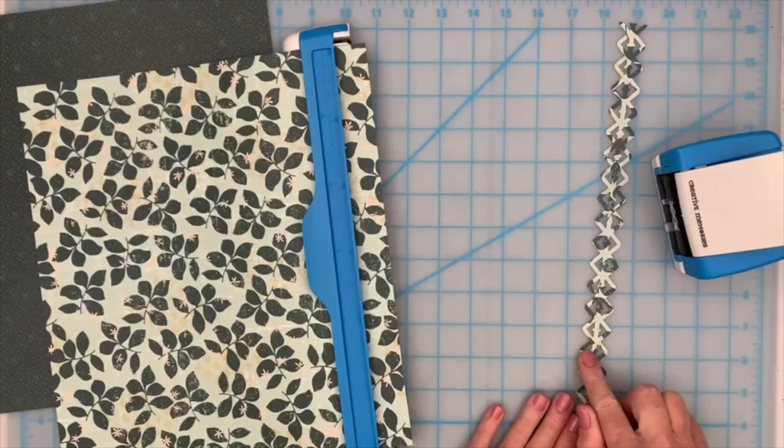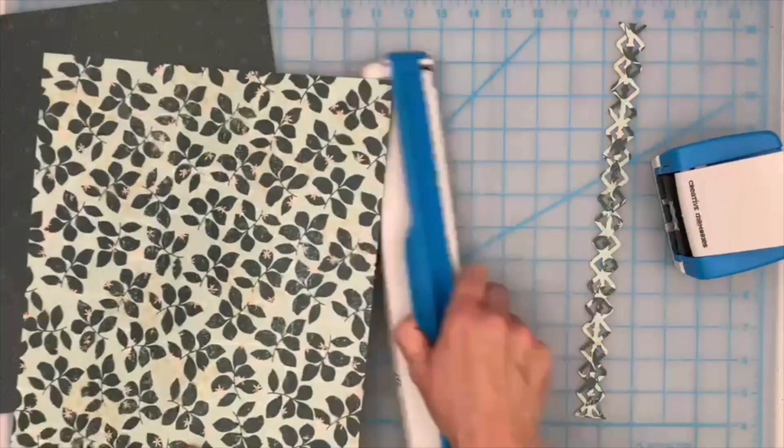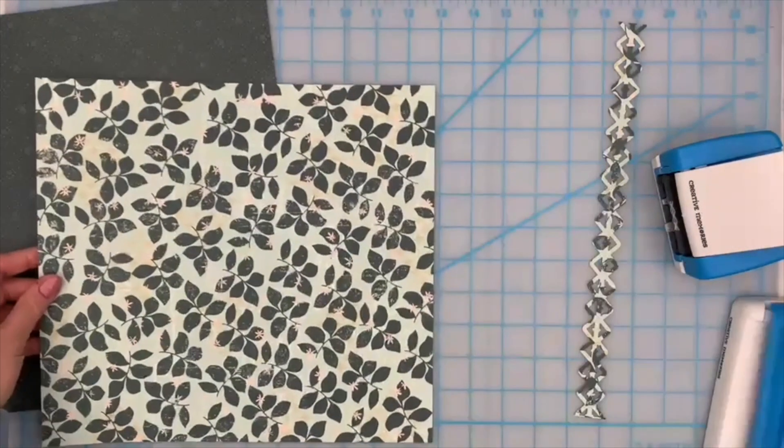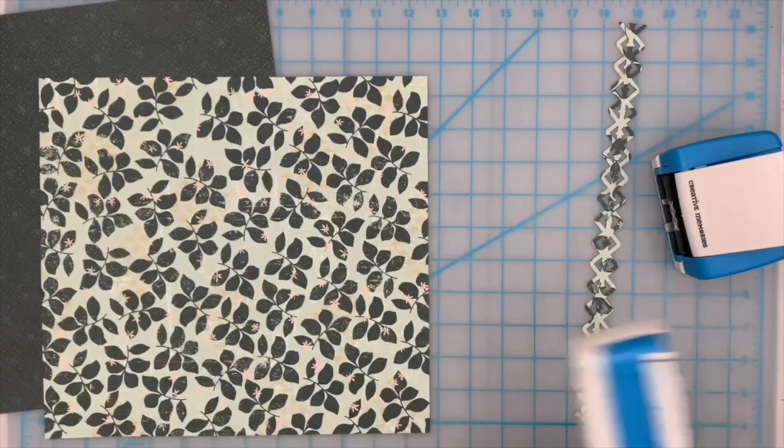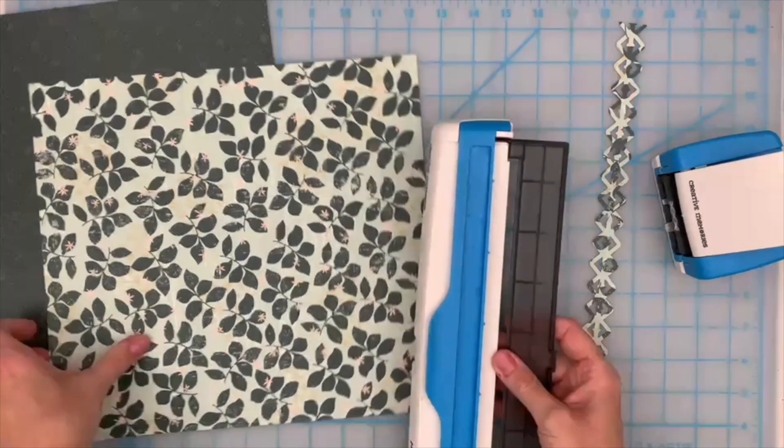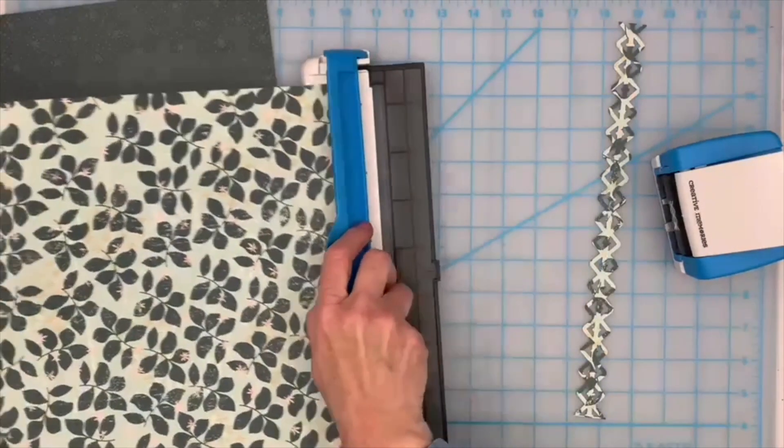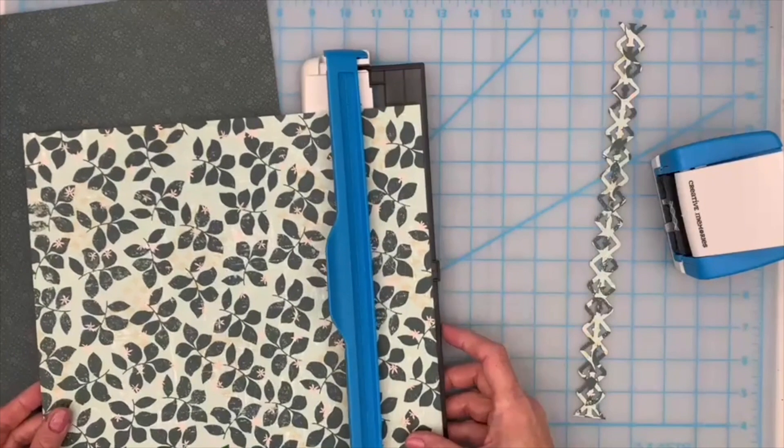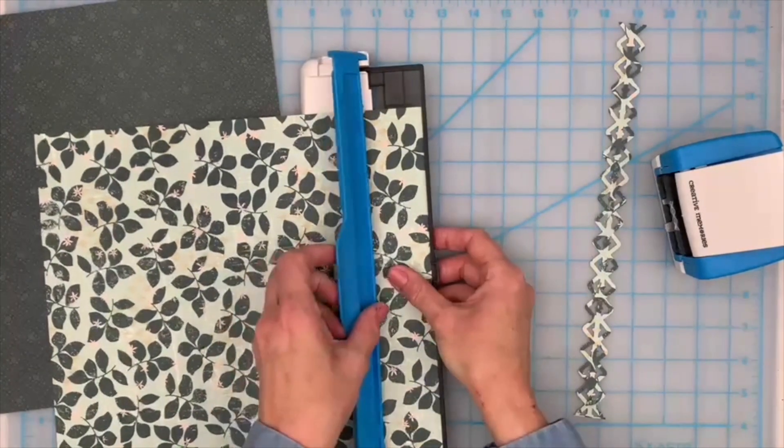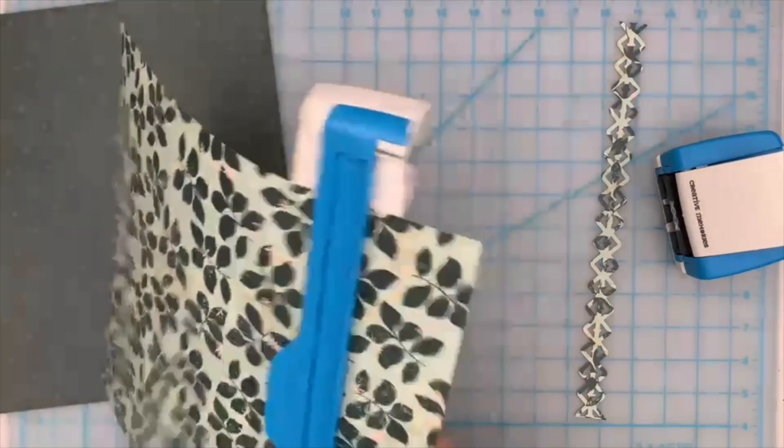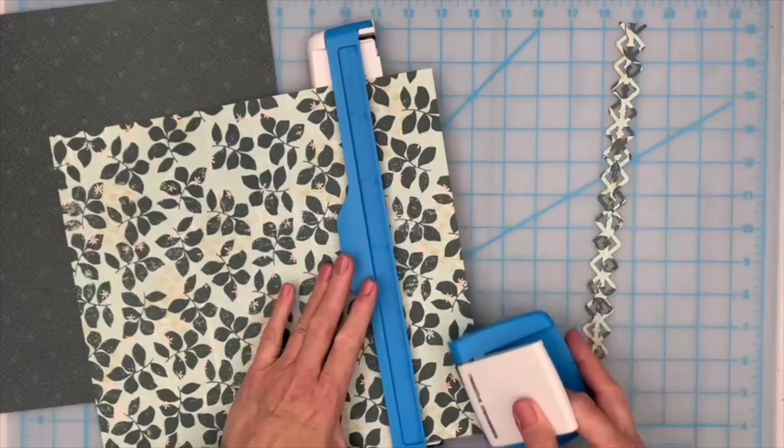There's one border, and now we're going to take the paper out and turn it so that the shorter side is the one that we're going to punch next. It's going to be a little bit shorter than the guide, but we'll just line it up and punch that entire length.